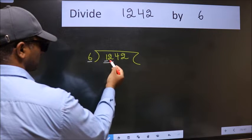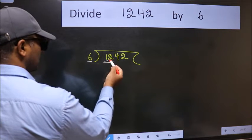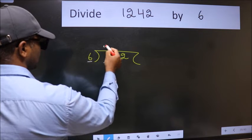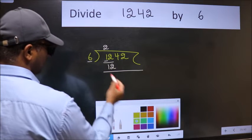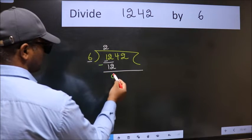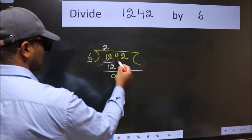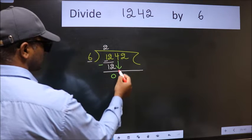So we should take two numbers: 12. When do we get 12 in the 6 table? 6 times 2 is 12. Now we subtract and get 0. After this, bring down the next number, so 4 comes down.